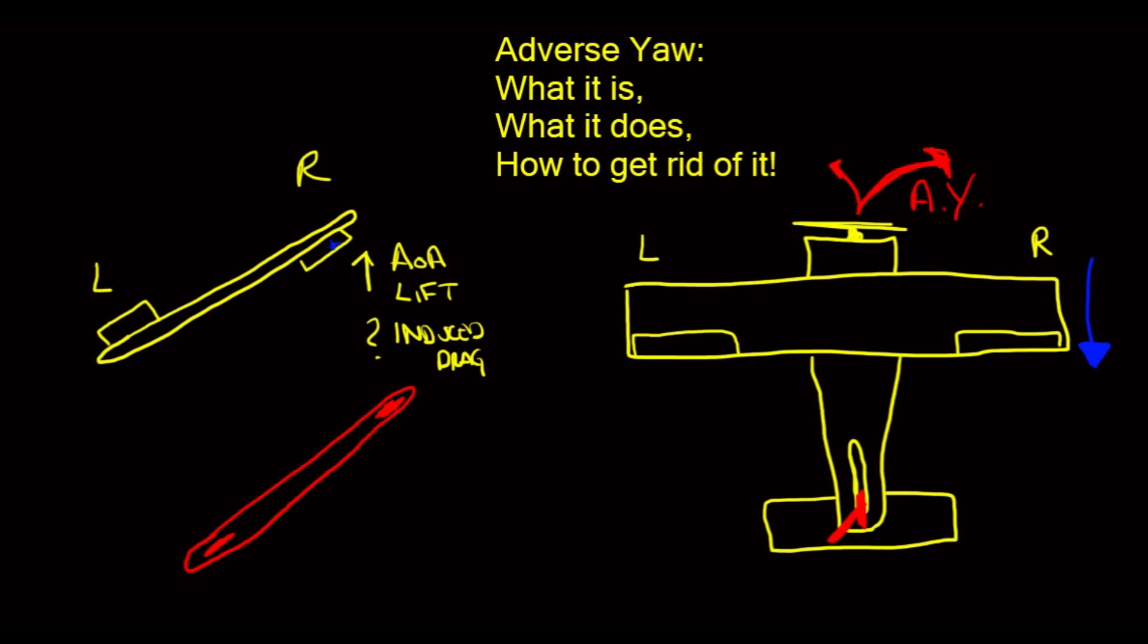So that's adverse yaw. That's what it is. That's what it does. And now you know how to get rid of it. Just lead a little bit with the rudder in the direction that you're banking, and adverse yaw will go away.